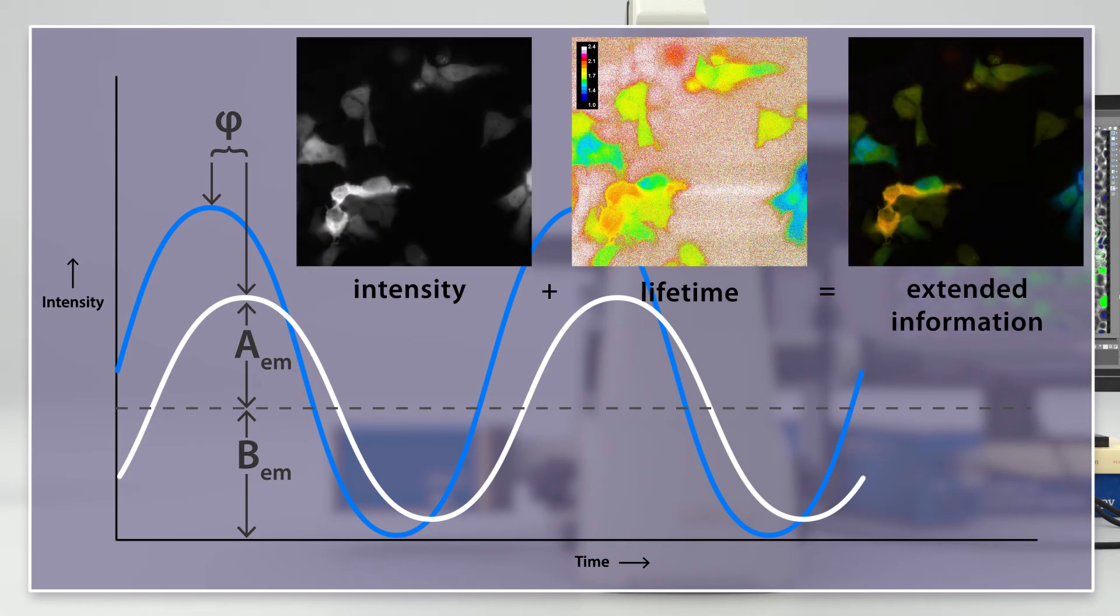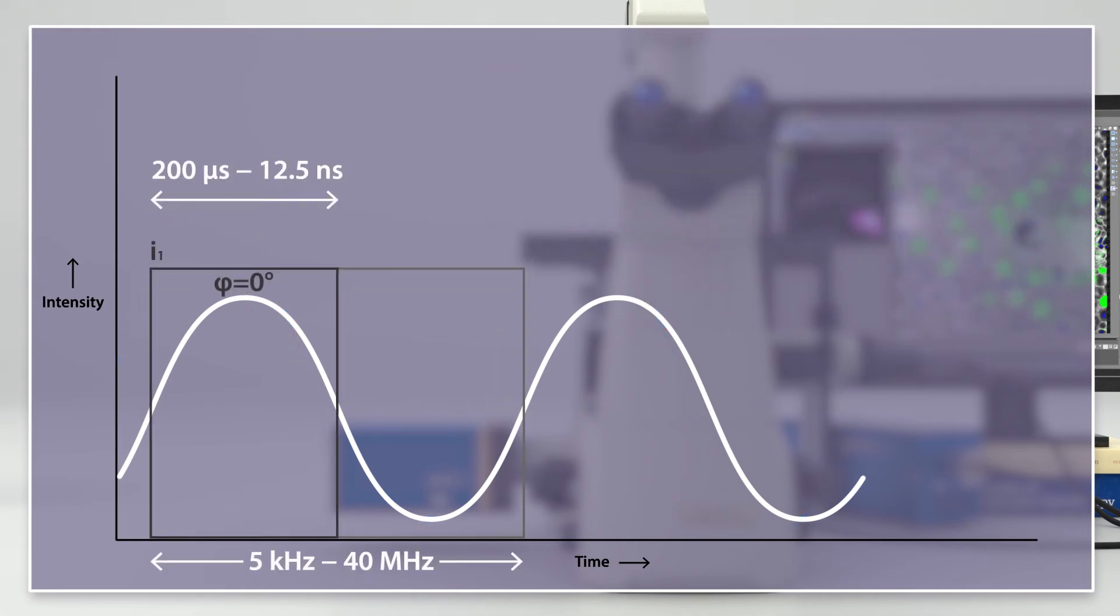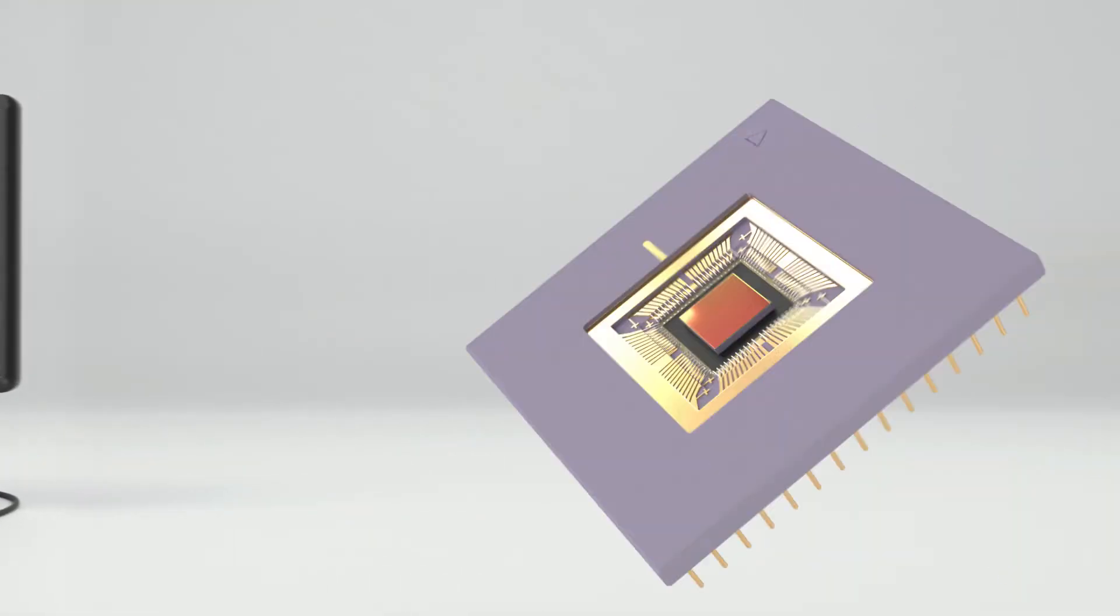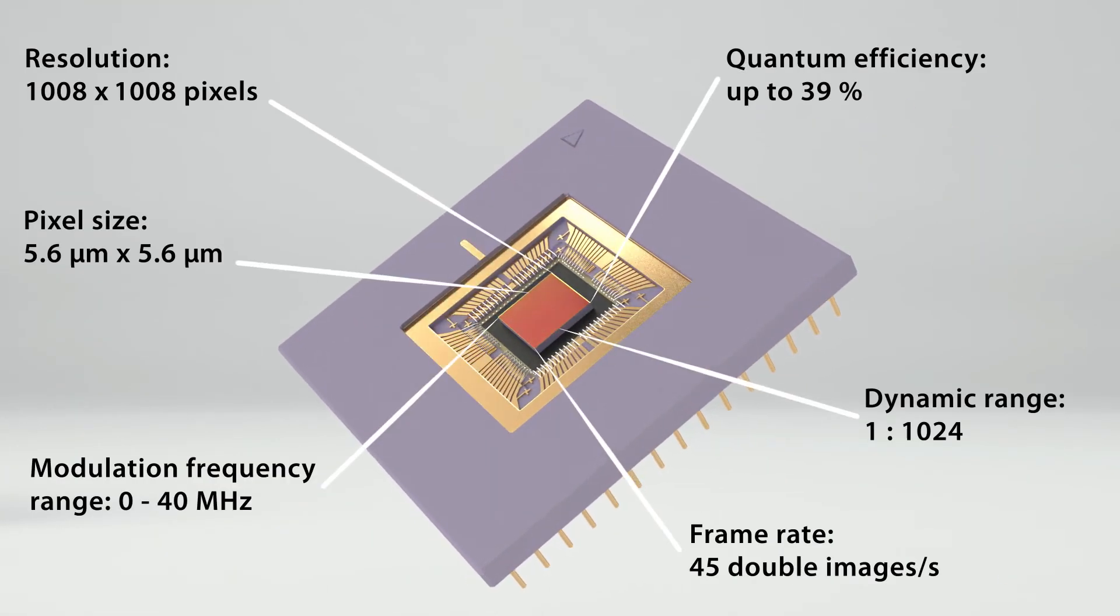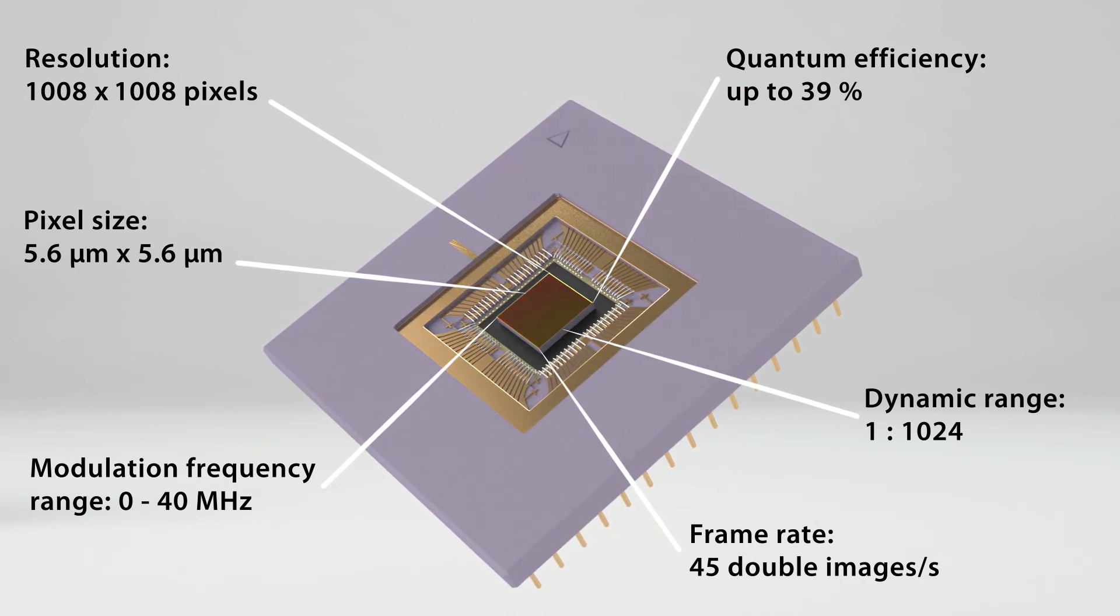These lifetime images extend the information obtained by common intensity images. The reconstruction of the emission signal by means of half-wave integration requires a fast modulatable image sensor. This is where the modulatable high-frequency sensor QMFLIM2 comes into play.